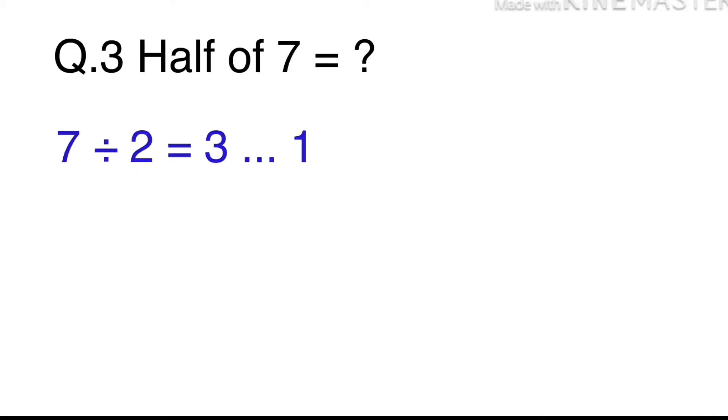7 divided by 2 is 3 with one left. Then, take the one that's left and divide it by 2 to get half. Now, simply add 3 and half together to get 3 and a half. The answer is B. 3 and a half.